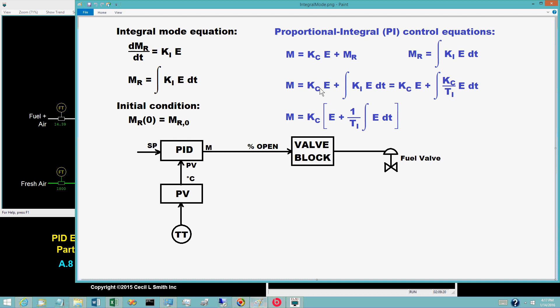The proportional term is the controller gain times the control error E. The integral term is the integral of K sub I E, dT.